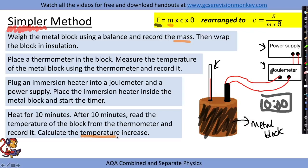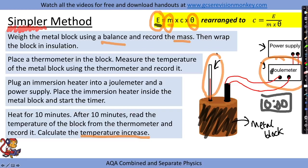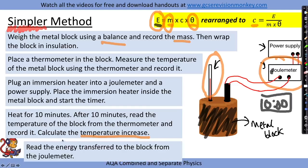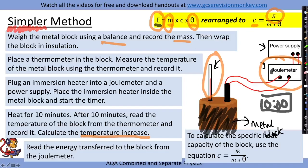Temperature after minus temperature before gives us the temperature increase. Now we have three values to calculate specific heat capacity: the energy from the joule meter, the mass recorded on the balance, and the temperature change from the thermometer. We rearrange the equation to make c the subject: specific heat capacity equals energy divided by mass times temperature change. We read the energy transferred from the joule meter and substitute the numbers into the equation.